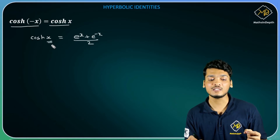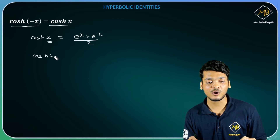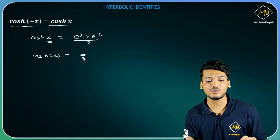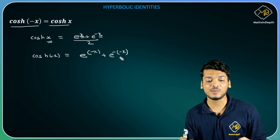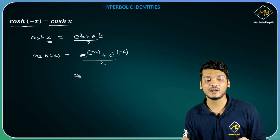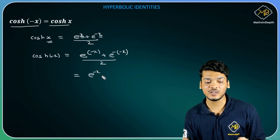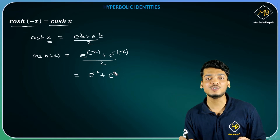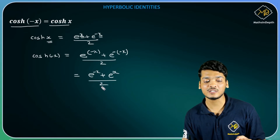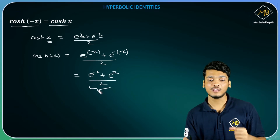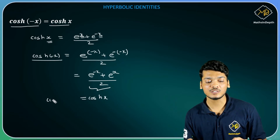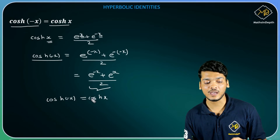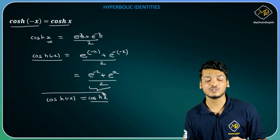If I replace x by minus x then I will get cosh(-x) equal to e raise to minus x plus e raise to minus of minus x divided by 2. So now this is equal to e raise to minus x plus e raise to x — because minus into minus gives plus — divided by 2. And this is the formula for cosh(x).